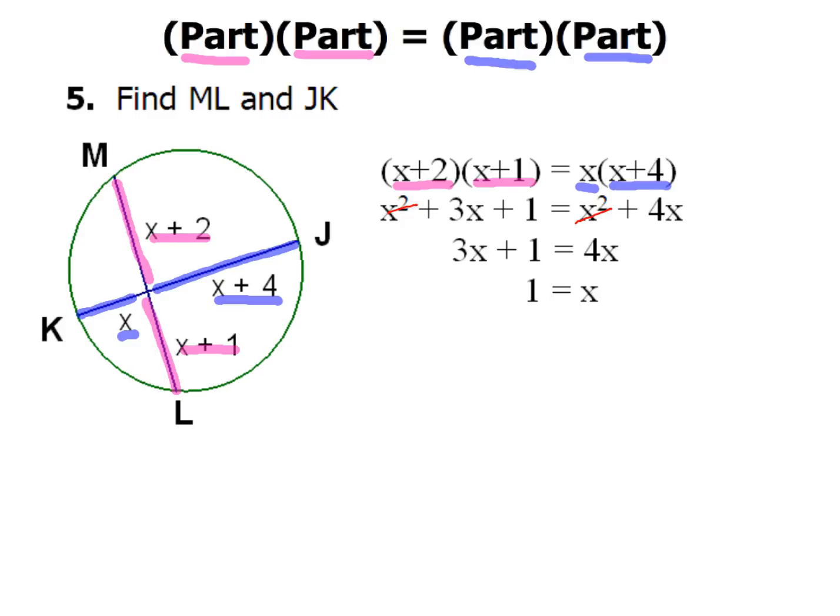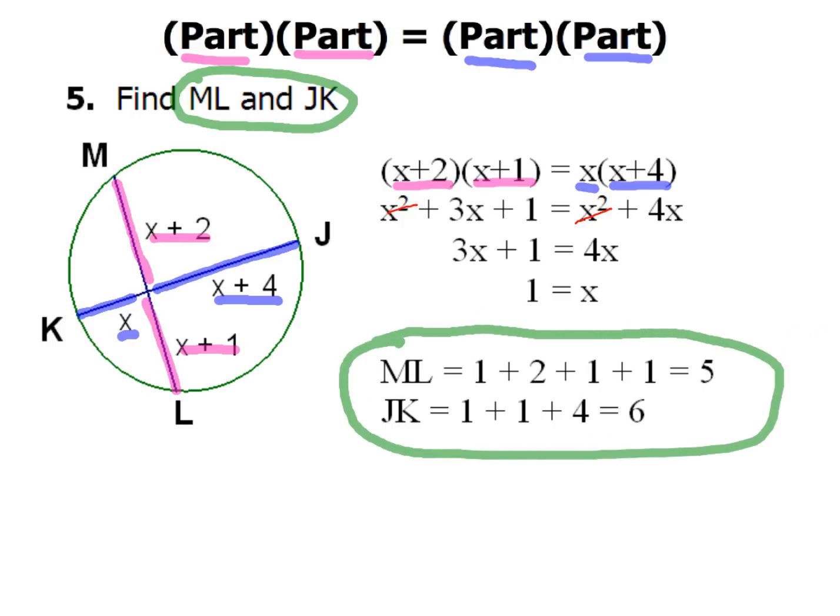Psyche! You are not done, fool. Check this out right here. We said, oh, let's find ML and JK. So we've got to take that, and we've got to put the value of X back in to find each one of those values. So take your time and do that, and do it correctly. Then see what you got. Hopefully, you came up with ML has a length of five, and JK has a length of six. So don't be all foolish and be like, I got X, I'm done. Peace out, yo. Nah, make sure that you go back and you answer the question, fool, because a lot of people get so excited they got X, they forget to go back and answer the question. So don't be that guy or that girl.